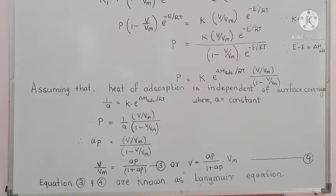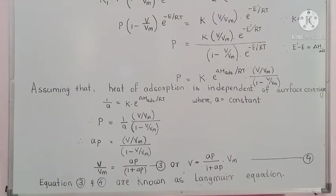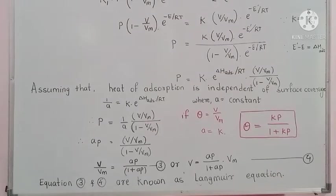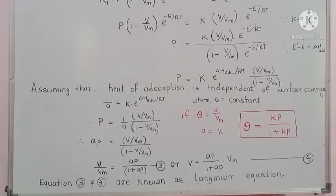Using this equation, we can calculate the equilibrium volume of the gas adsorbed per unit mass. In some references, V/Vm is replaced by theta (θ), and the constant A is replaced by K. The equation then becomes: θ = KP / (1 + KP), where θ equals V/Vm, which represents the fraction of surface sites occupied by gas molecules — that is, the number of adsorbed sites occupied divided by the number of adsorption sites available.